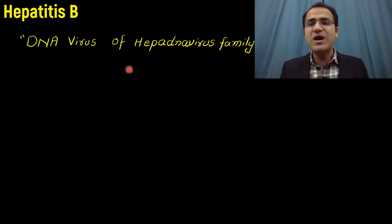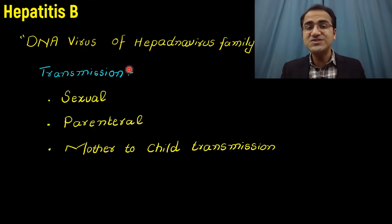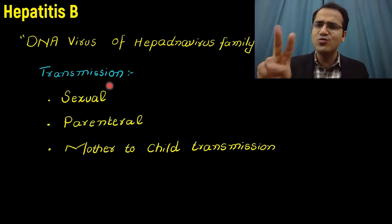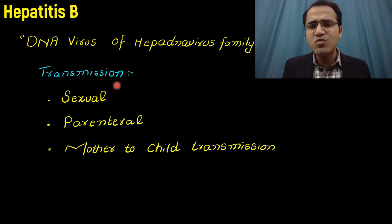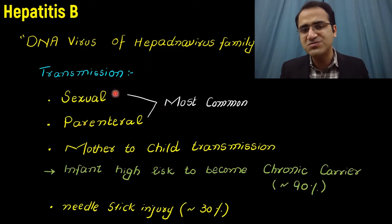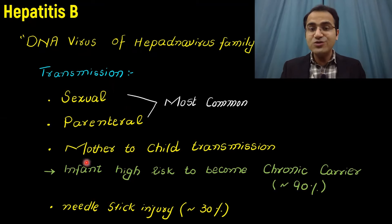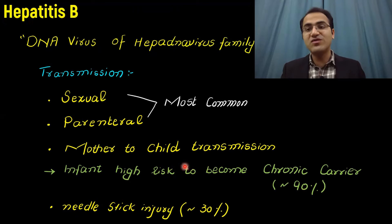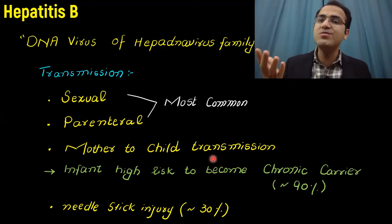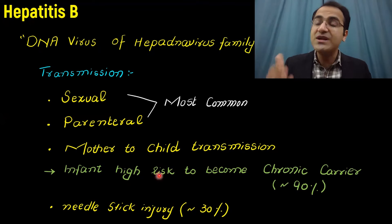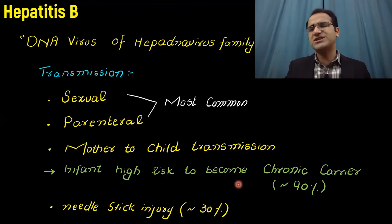Hepatitis B virus is a DNA virus of the hepatitis virus family, transmitted mainly through two routes: sexual and parenteral. Parenteral means the IV route. These are the two most common routes of transmission. Mother-to-child transmission is also a route, called vertical transmission, where the baby gets infection during the birth process and that infant becomes a chronic carrier in 90% of cases.